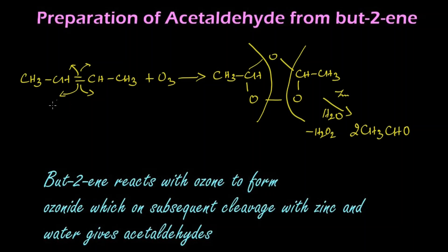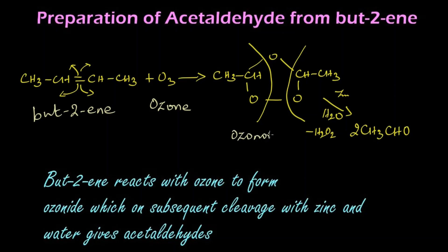This is but-2-ene. But-2-ene reacts with ozone and we get an ozonoid as an intermediate. The ozonoid on hydrolysis in the presence of zinc gives hydrogen peroxide and acetaldehyde.